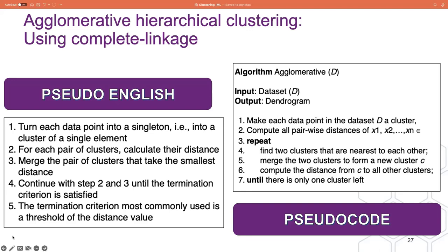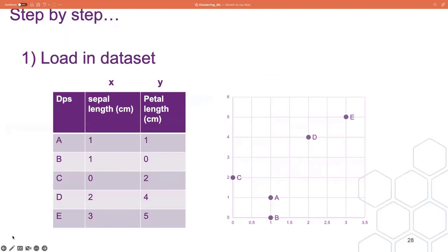To get a more in-depth view of hierarchical clustering, we're going to focus on an example using the agglomerative approach with complete linkage method. We have pseudo-English as our simple to-do list for the algorithm and pseudocode on the right. Our input is our dataset D and our expected output is a dendrogram describing the relationship between our clusters. The first thing to do is load in our dataset — we have our iris dataset with five data points A to E and two features: sepal length and petal length shown as X and Y. On the right is the scatter plot of these points.